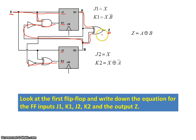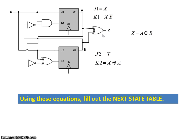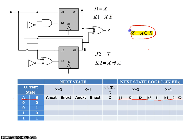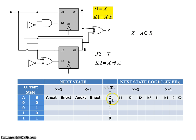Now that we've come up with the expressions, the next thing we want to do is use these equations to fill out the next state table. We have current states A and B, and we need to find the next states. Let's start with the output Z. Z is A XOR B, so: 0 XOR 0 = 0, 0 XOR 1 = 1, 1 XOR 0 = 1, and 1 XOR 1 = 0.